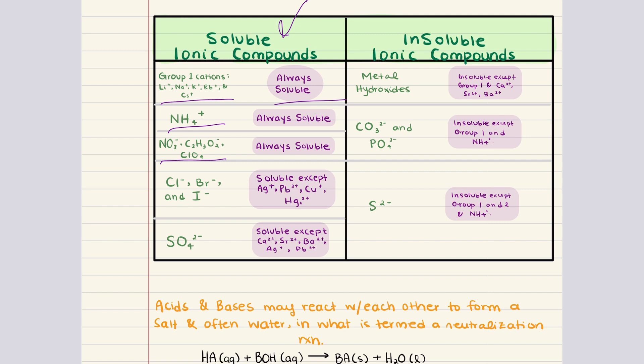Halides like chloride, bromide, and iodide are generally soluble except when they're combined with silver, lead, copper, or mercury. Sulfates are also mostly soluble except when paired with calcium, strontium, barium, silver, or lead.